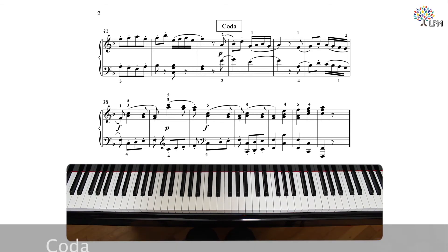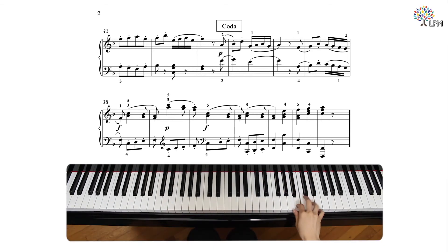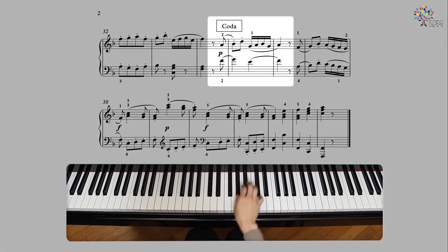The coda is essentially taken from the last part of the main theme, then spun out into a series of short snippets of ascending eighth notes on the left hand and double notes on the right hand in different registers.